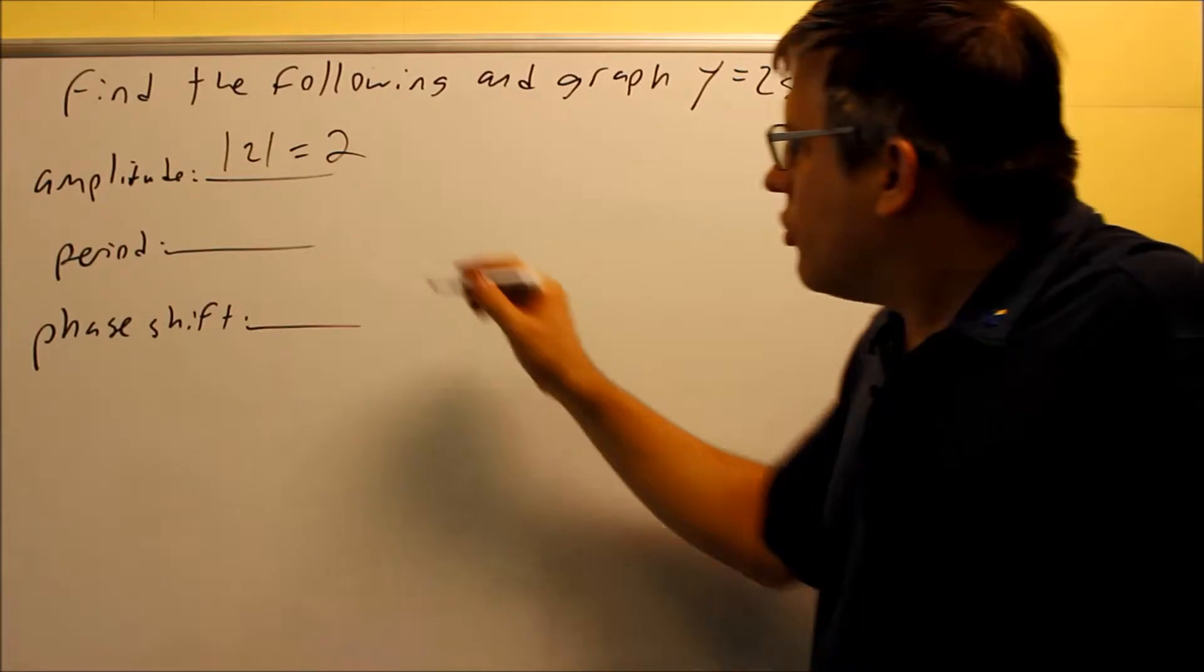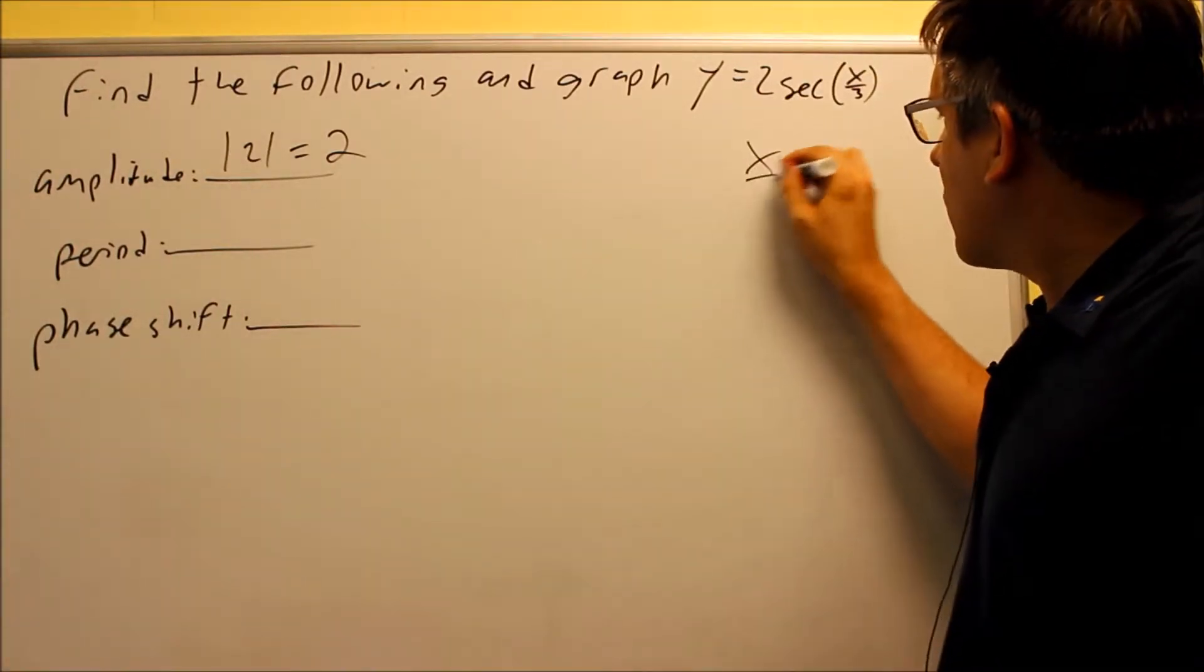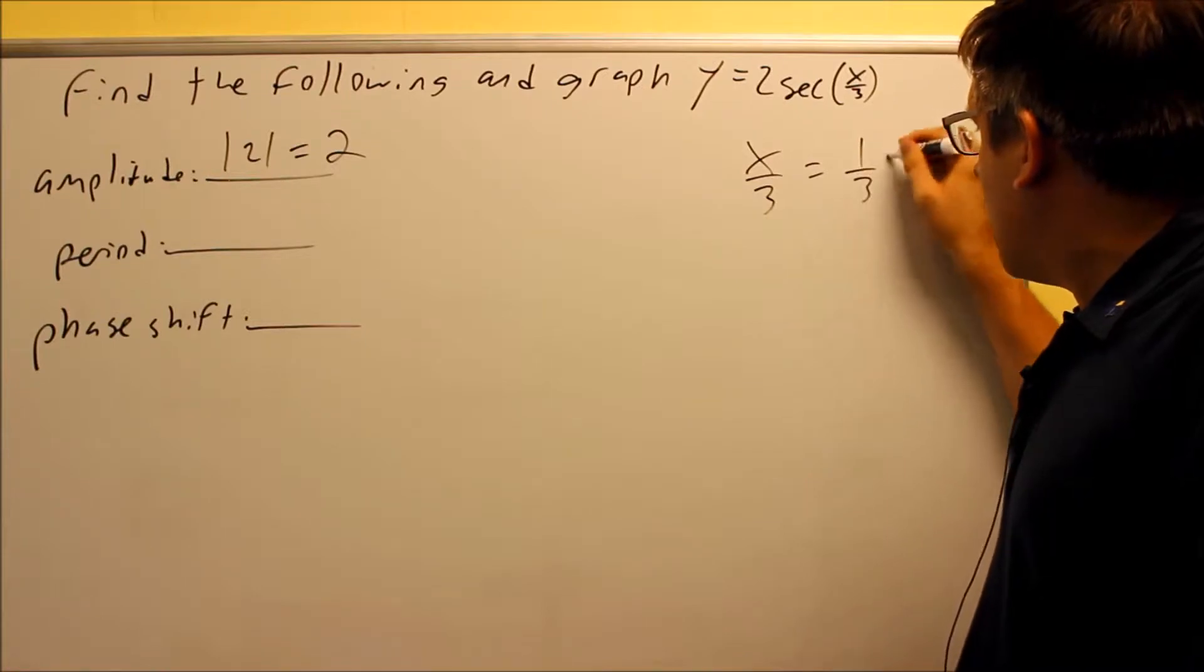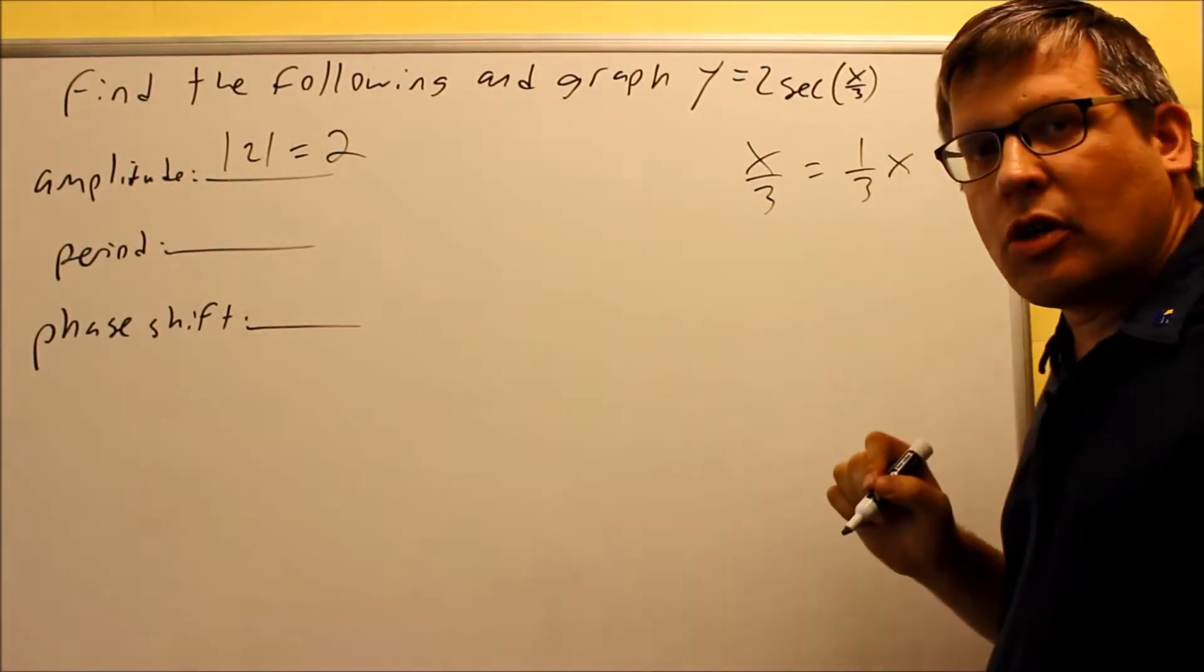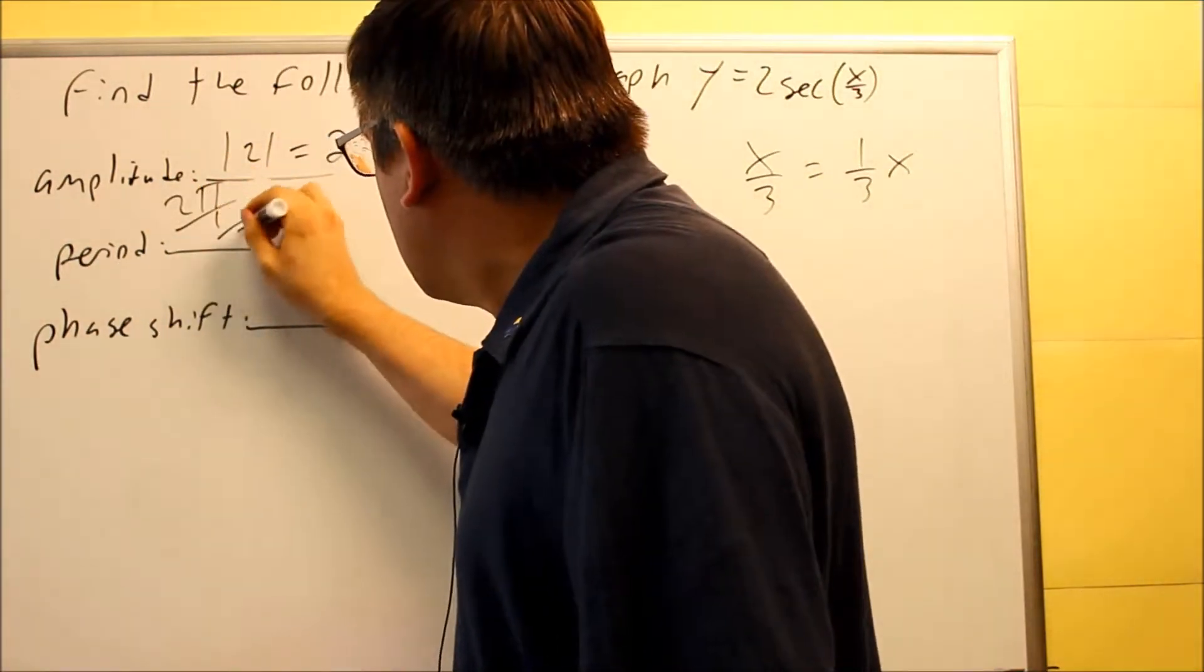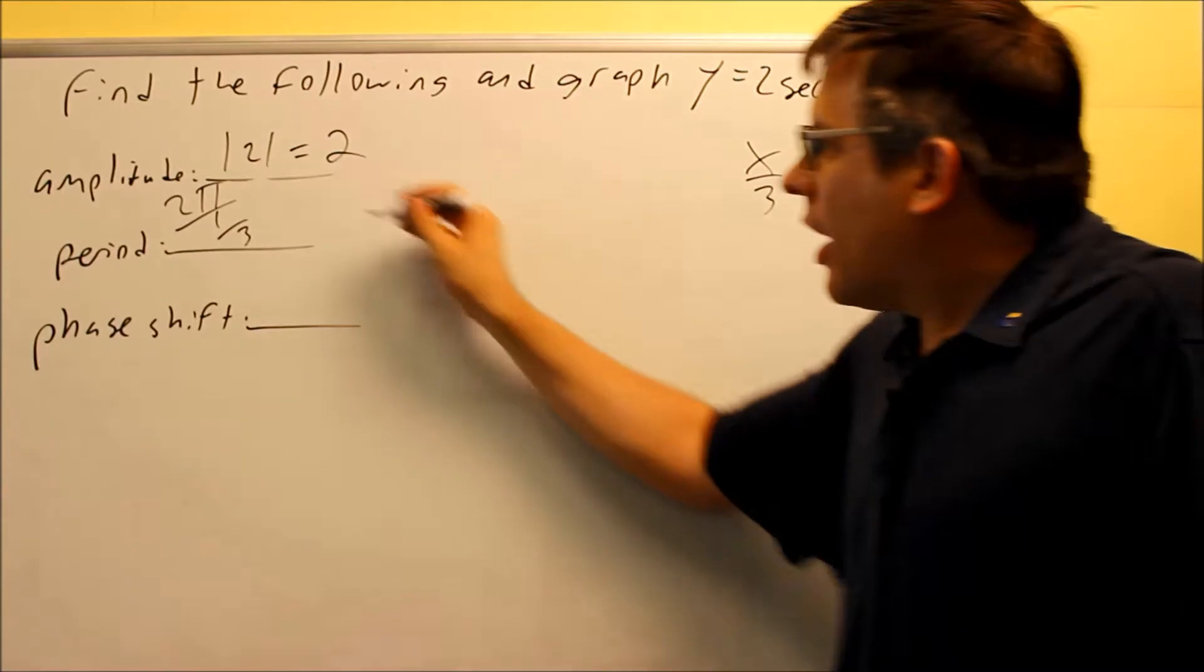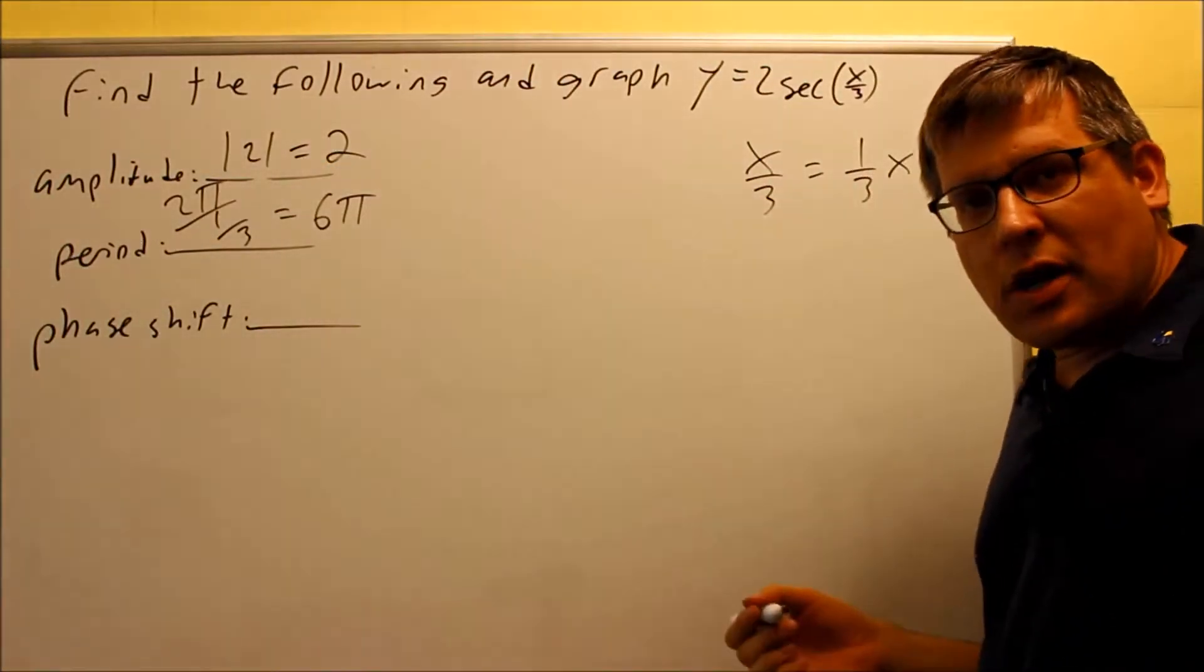Your period is going to be 2π divided by the number in front of the x. Now if I have x over 3, that's the same thing as 1 third x. So the number in front of the x is really 1 third. So I'm going to do 2π divided by 1 third. And when I simplify, I get my period is going to be 6π.